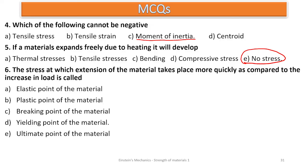Question six says: the stress at which extension of the material takes place more quickly as compared to the increase in load — that is called yielding. So a material is said to be yielding when it extends more quickly compared to the increase in load. We know that stress is proportional to strain, but here a little additional load will make it expand quickly. In such situations we say there is yielding, meaning the material is at the yielding point. That is D.